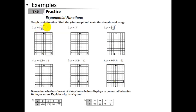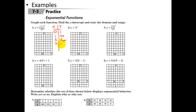Let's graph y equals one tenth to the x. We'll make a table with x and y. When x is 0, anything to the 0 is just 1. When x is 1, we have an output of 1 tenth. When x is 2, we have 1 tenth squared, which is 1 tenth times 1 tenth, which is 1 over 100. When x is 3, it's going to be 1 over 10 to the third, which is 1 over 1,000.